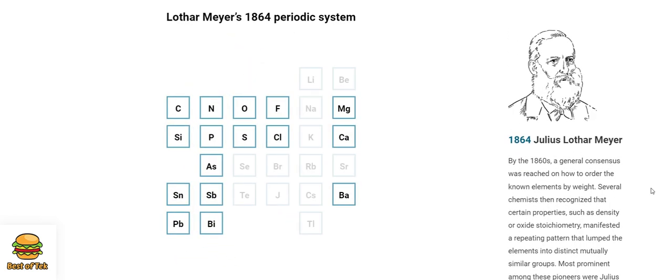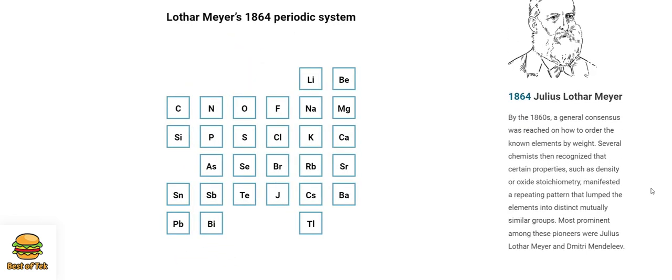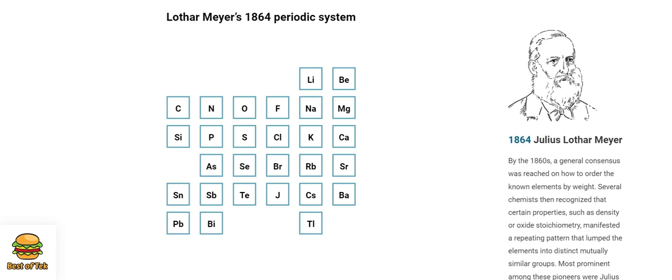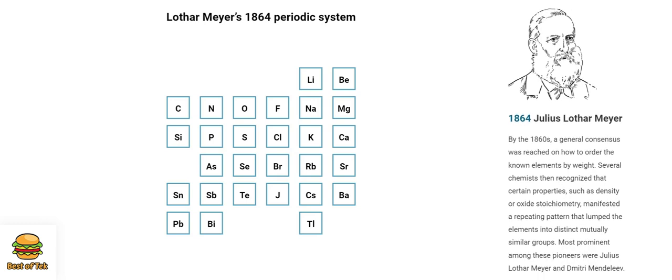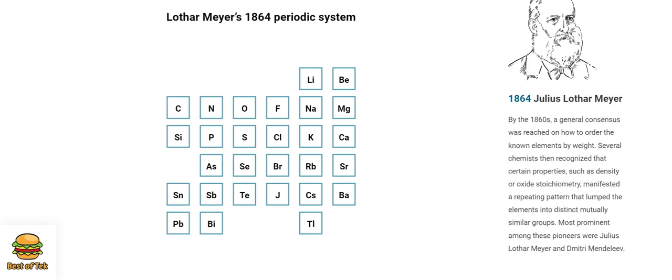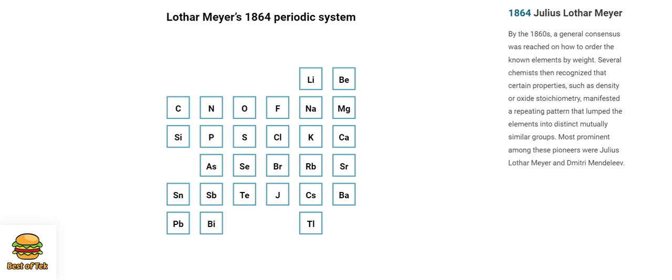1864. Julius Lothar Meyer. By the 1860s, a general consensus was reached on how to order the known elements by weight. Several chemists then recognized that certain properties, such as density or oxide stoichiometry, manifested a repeating pattern that lumped the elements into distinct, mutually similar groups.